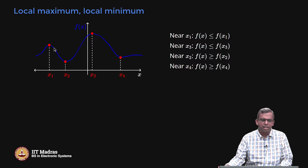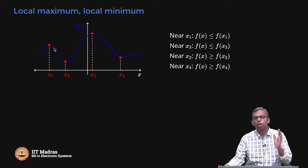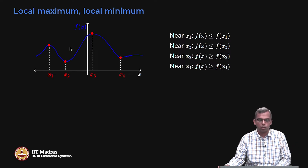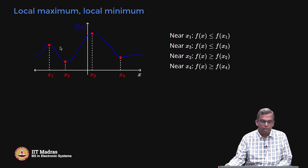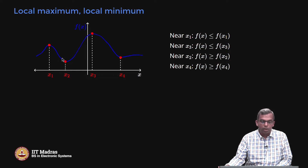Local maxima is interesting because if you can find all the local maxima, you can also find the global maxima. Analogously, x2 and x4 are local minima. At those points, f(x) is greater than or equal to f(x2) — so near x2 and x4, the value of f(x) is greater than or equal to the function value at those points.